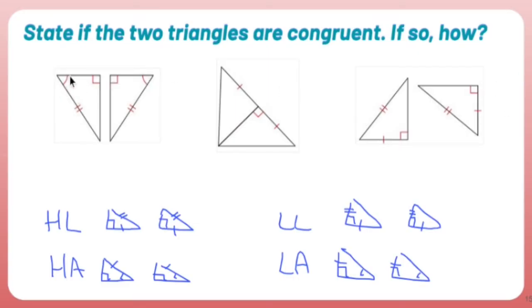So right triangle, angle, hypotenuse are the same, that's HA. Okay, angles, hypotenuses, right triangle, HA.